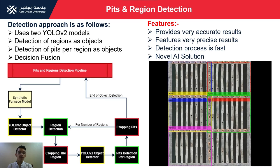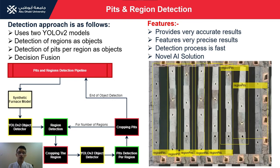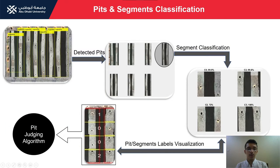Our approach for pit detection uses an AI-based object detector — specifically YOLO v2. As the pipeline shows, the first object detector detects regions in the map, and the second model detects pits per region. The pits are then divided into segments, which go through the classification process, followed by rule-based decision fusion.